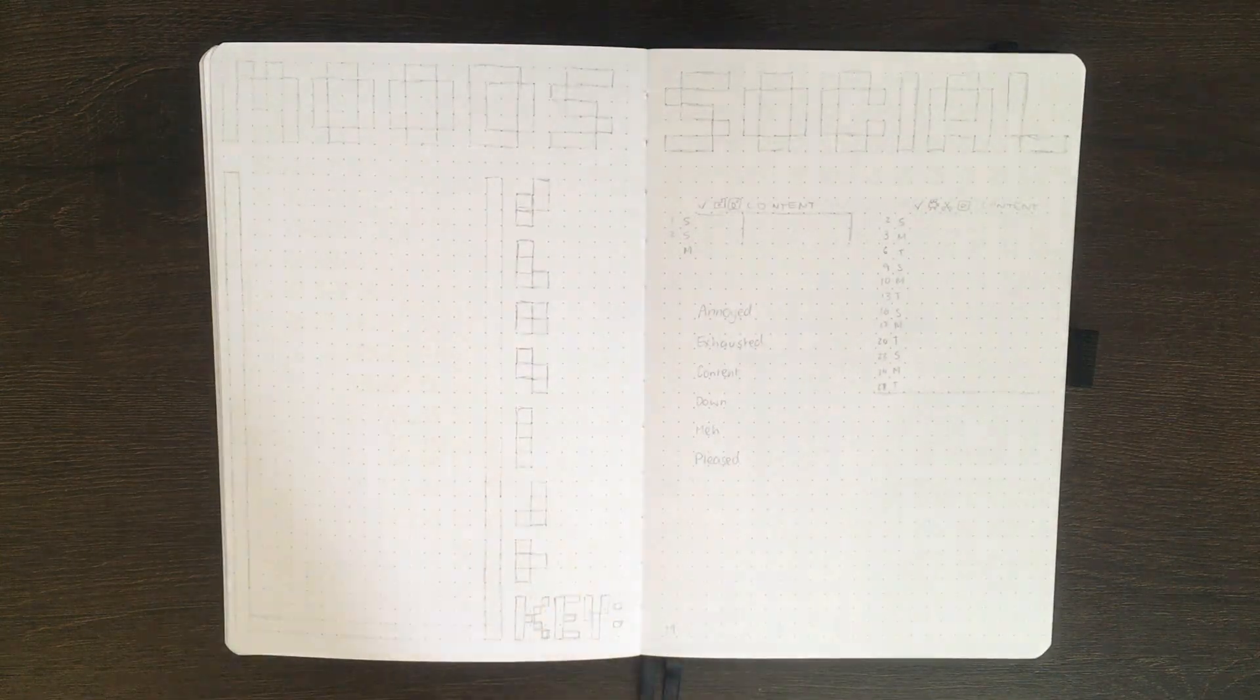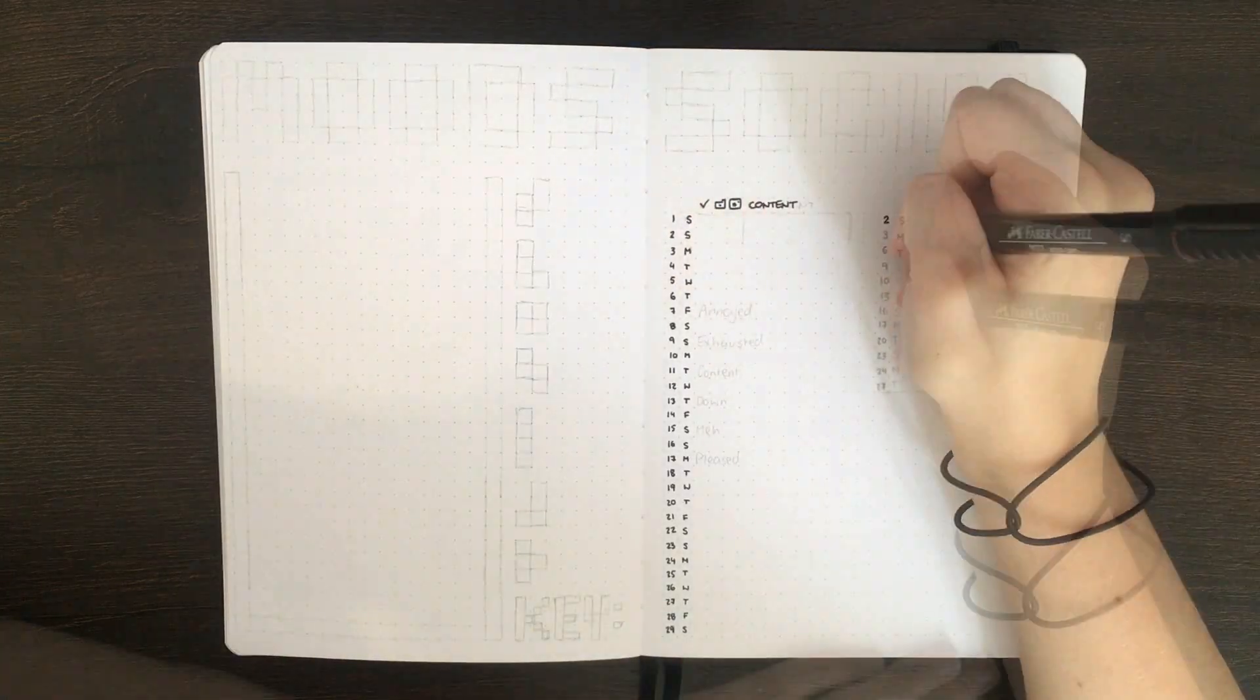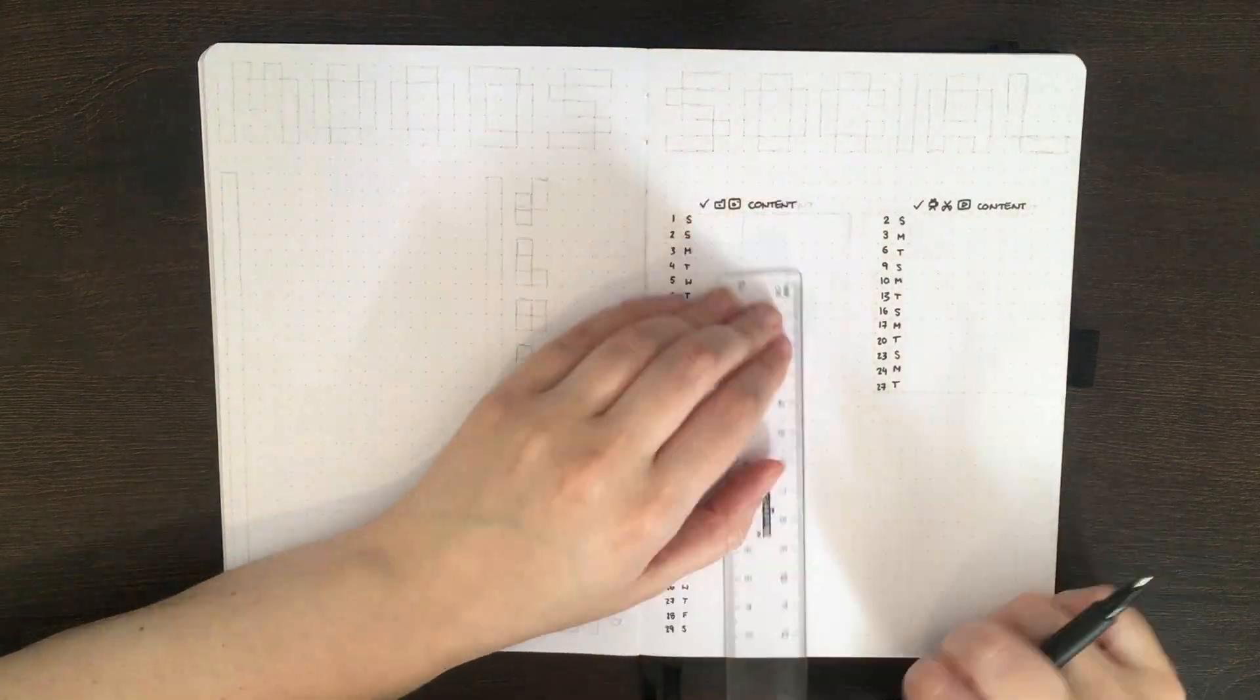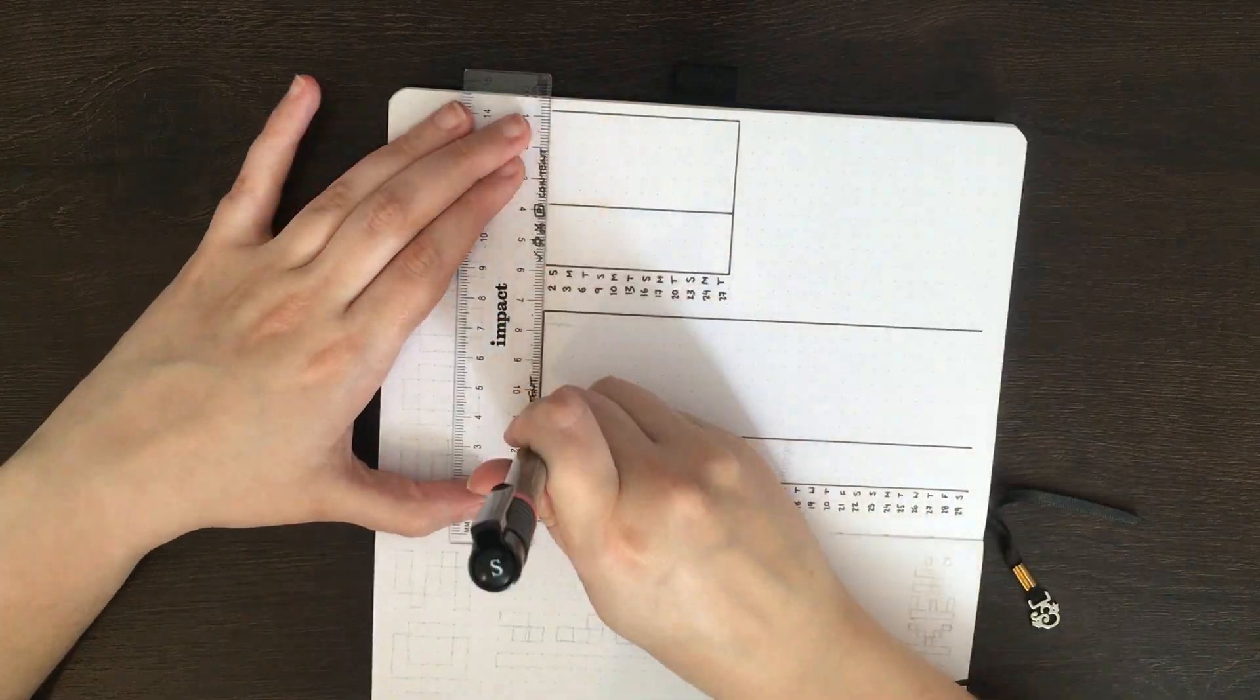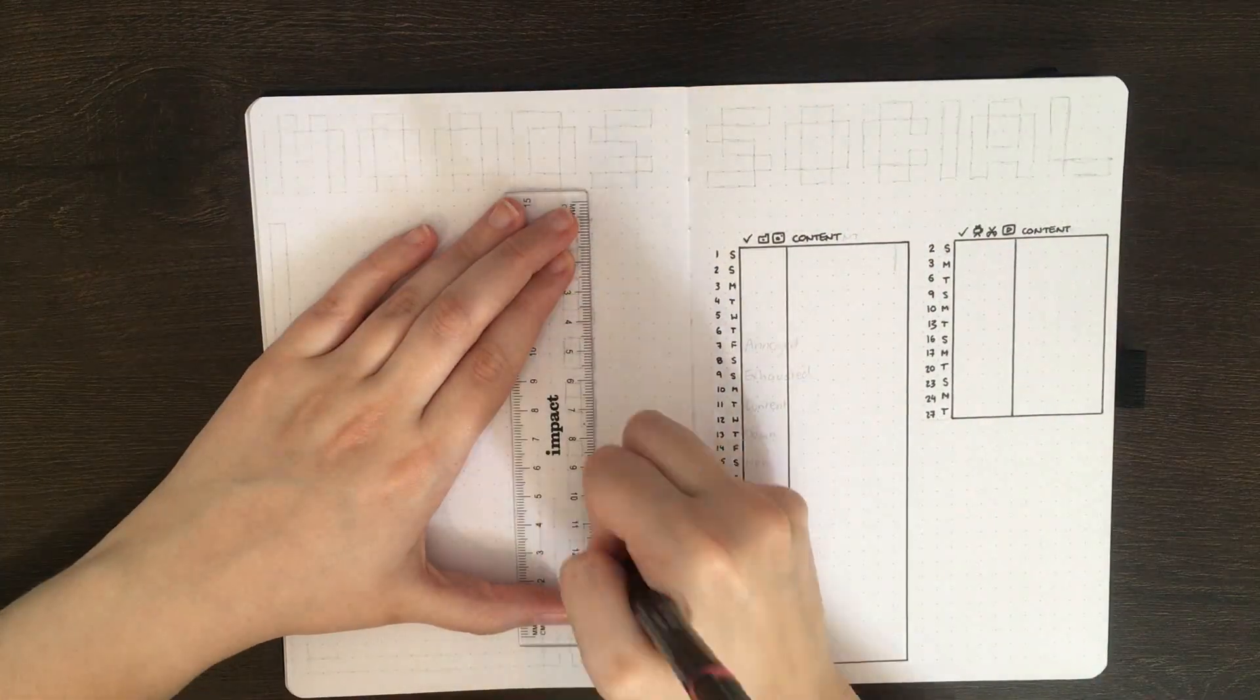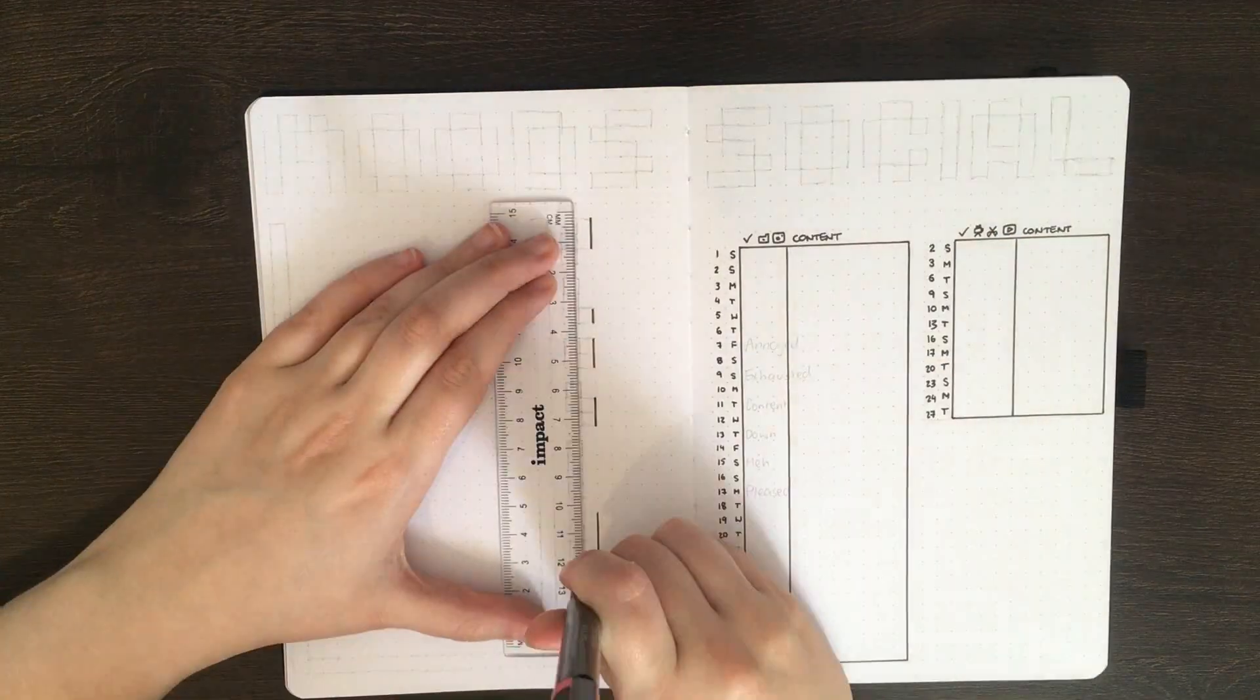With those two trackers set up though, it was on to the next two. So on this spread I have my moods tracker and my social media scheduler. I did make double sure that I had enough space for all 29 days before I started numbering on this one. Somehow I managed to measure the social media scheduler up correctly, but not the steps tracker. Measure twice, draw once, always.